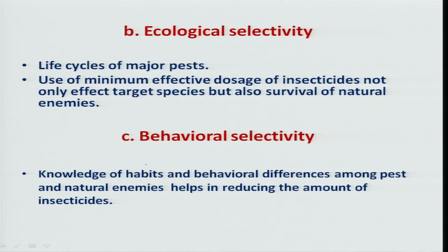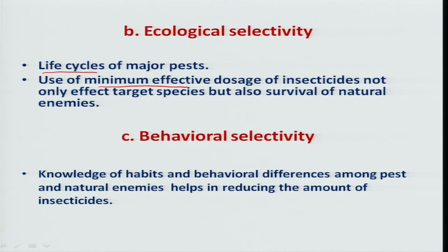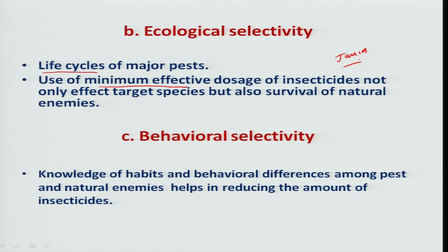Coming to ecological selectivity, one needs to study the life cycle of a particular insect pest before its management. By studying the life cycle of the insect, we will understand the weak points in its developmental stages or in its life cycle. By knowing the weak points, we can use a very minimum amount of insecticide which is most effective at a low concentration, thereby the target species can also be checked as well as the natural enemies can also be preserved. For example, in case of cotton, in the early days up to 30–35 days, leafhopper or jassid is one of the important pests on cotton, and it affects the growth of the plant.